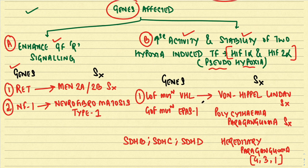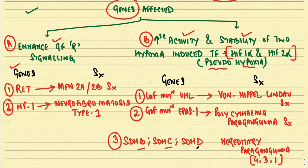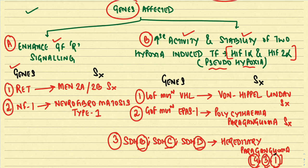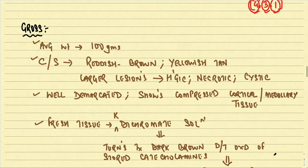Category B genes include: a loss-of-function mutation in the VHL (von Hippel-Lindau) gene, leading to von Hippel-Lindau syndrome; a gain-of-function mutation in the EPAS1 gene, associated with polycythemia-paraganglioma syndrome; and mutations in succinate dehydrogenase-encoding genes SDHB, SDHC, and SDHD, which are implicated in the mitochondrial electron transport system. SDHB mutation leads to hereditary paraganglioma type 4, SDHC to type 3, and SDHD to type 1.